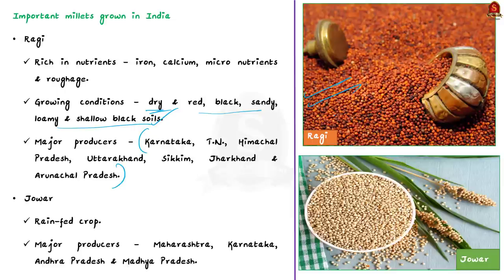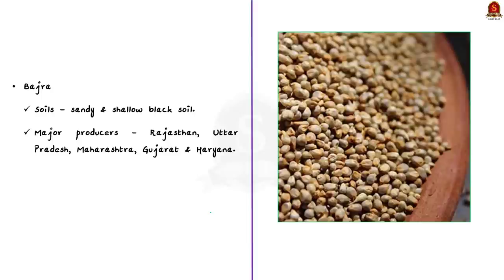Jowar is the third most important food crop with respect to area and production in our country. It is a rain-fed crop and hence grown in moist areas which hardly need irrigation. The major jowar-producing states are Maharashtra, Karnataka, Andhra Pradesh, and Madhya Pradesh. Next comes bajra, which grows well on sandy soils and also on shallow black soil. States like Rajasthan, Uttar Pradesh, Maharashtra, Gujarat, and Haryana are the major bajra-producing states. These are the basic facts about millets, especially the ones grown in India.